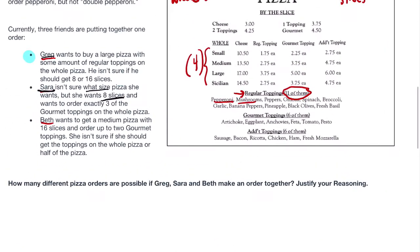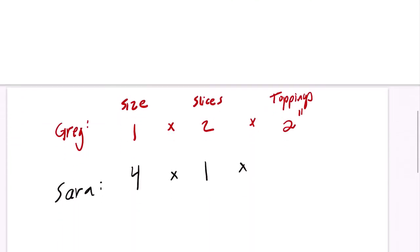What about toppings? For toppings, she wants to order exactly three of the gourmet toppings. That's right here. There are six of them. So choosing any three of those six, that's six choose three. The order of her choices don't matter, just which three toppings she picks.